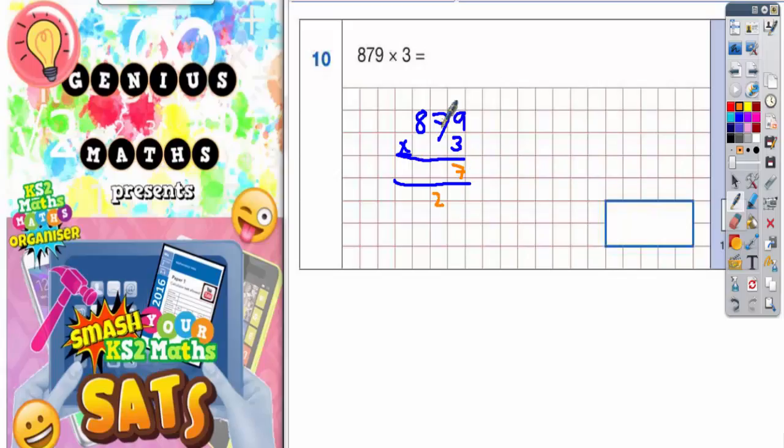3 sevens are 21. Plus the 2 is 23. Put the 3 in, carry the 2.